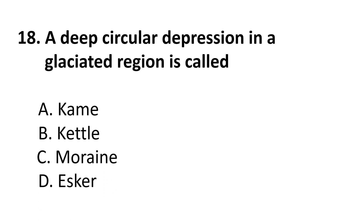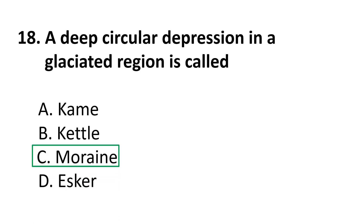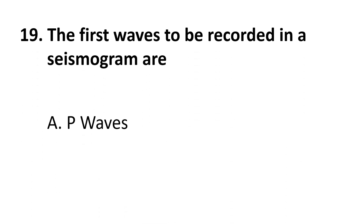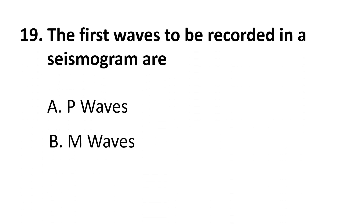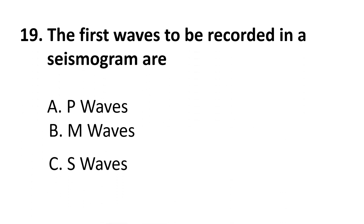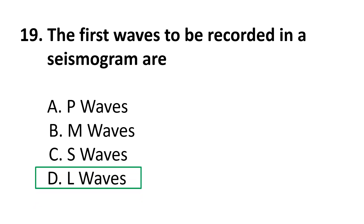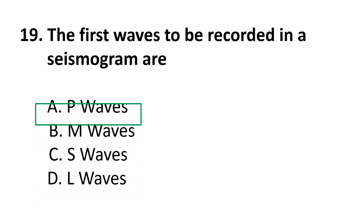The correct answer is B: kettle. Coming to the nineteenth question: the first waves to be recorded in a seismogram are — A) P waves, B) M waves, C) S waves, D) L waves. The correct answer is A: P waves.